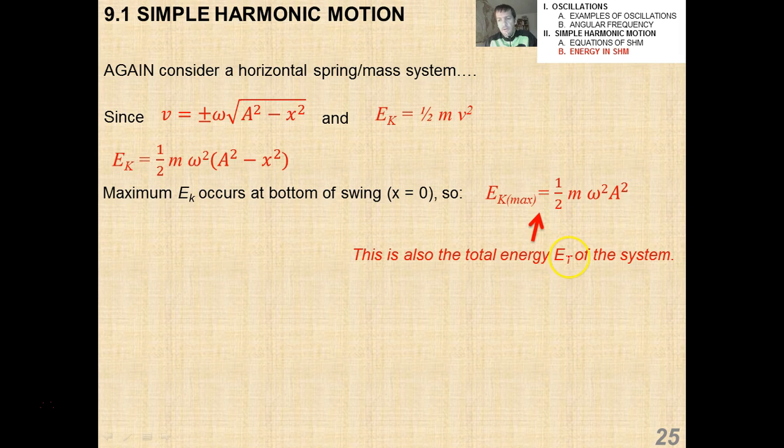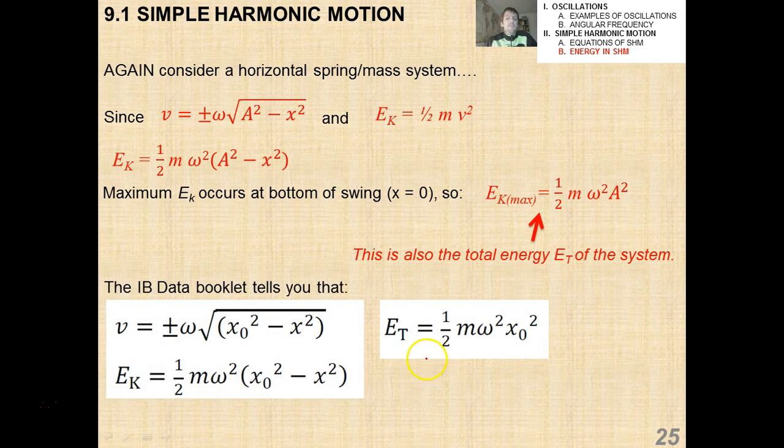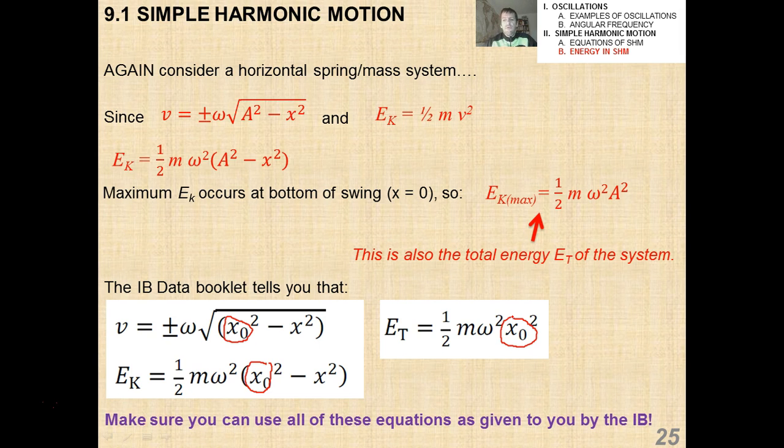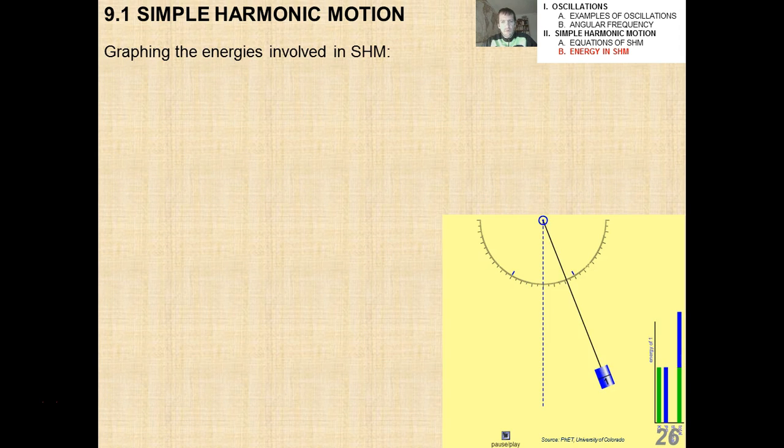The total energy, you want to really simplify things and think about how the mathematics models something happening in real life. Now the IB data booklet gives you these three equations right here. So you see that all of these equations are different versions of what I've done here, with just the variables shown slightly differently. Again, notice their use of x naught instead of my use of A. I still think that capital A makes more sense because that's the amplitude, and x naught basically suggests that that's the position, the value of x at t equals zero, which it's not always. But just make sure that you can use all these equations as given to you by the IB in your data booklet.